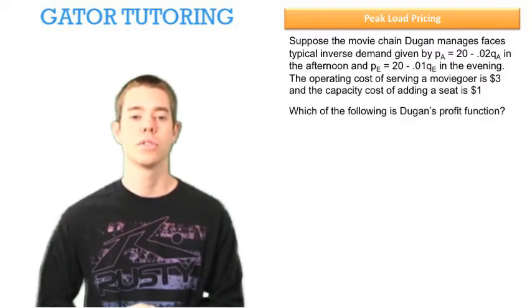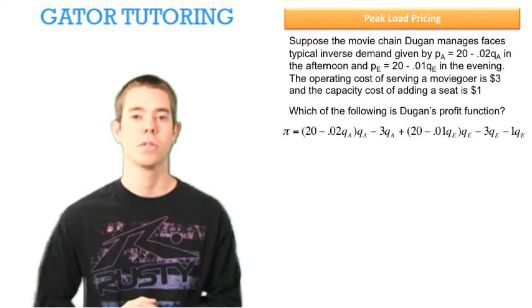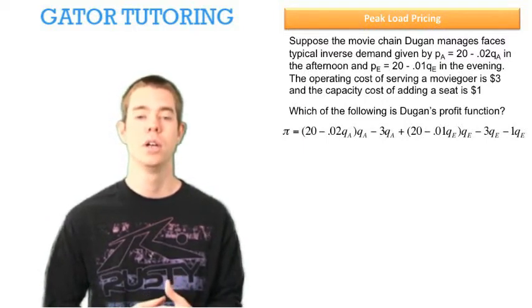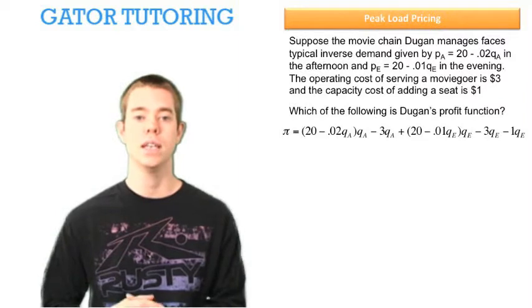The question is asking, which of the following is Dugan's profit function? Well, to start, we want to write profit like this. Profit is total revenue in the afternoon minus the marginal cost times the quantity in the afternoon plus total revenue in the evening.